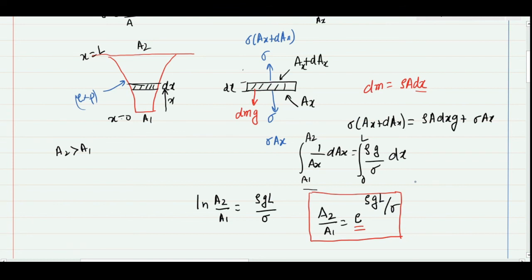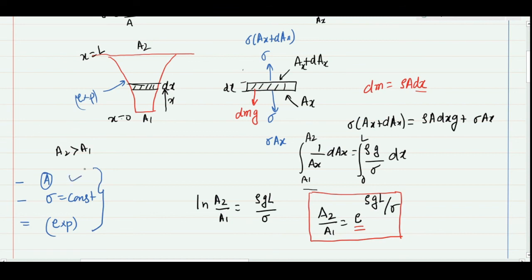In summary, for extension due to self-weight, the extension is independent of cross-section area. To make a bar of uniform strength, the stress must be constant throughout the length, and the cross-section area follows an exponential variation. These three concepts are the key takeaways of today's session. For semester exams, all the derivations are important as well. Good day and thank you.